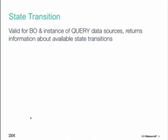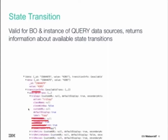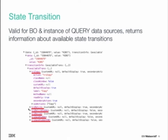We also enhanced the data source to provide state transition information. This is valid for a BO instance and an instance of the query data sources, and it returns information about the state transitions that are available. For example, you can see various information about the available transitions returned in an object in parallel with the data. Try copy, try retire, try retire hidden, try revise, save hidden, and save hidden CAD are all supported as state transitions based on the current state of this business object. That concludes the discussion about enhancements on the data source component.